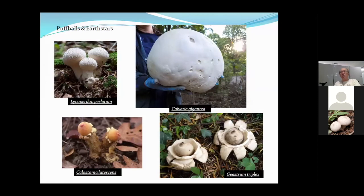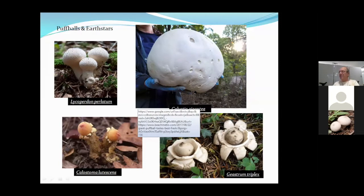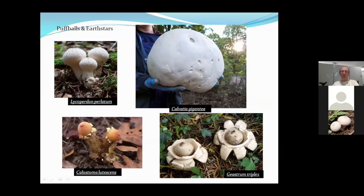Another group of Basidiomycetes are the puffballs and earth stars. Some puffballs get really big, like Calvatia gigantea. We have the western giant puffball, Calvatia booniana, about 12 inches in diameter brought in today at the botanic gardens. They are good edibles if you cut them open and the interior is all white throughout.